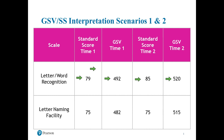In scenario two, letter naming facility showed a standard score of 75 at both time one and time two. However, the child's GSV went up from 482 to 515, showing that the child's letter naming skill went up from time one to time two — but it went up at the same speed as their peers, because the standard score did not change. They still remained well below their peers at the second evaluation phase.